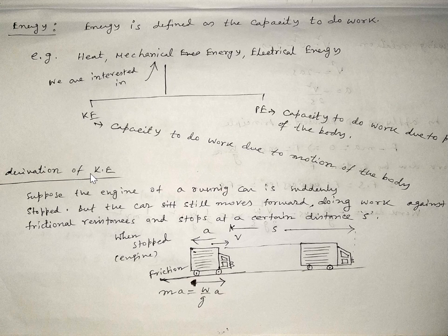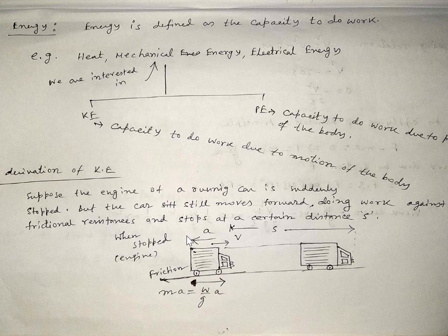We will now derive a mathematical expression for kinetic energy. Suppose a vehicle is moving with a constant velocity V and we suddenly stop its engine — that is, we discontinue the energy supply causing the motion. Even after stopping the engine, the vehicle will move some distance due to its inertia. The only force acting on it is frictional resistance, but the energy possessed due to its motion is sufficient to move it forward for a small displacement. This is the kinetic energy causing motion after the engine stops.